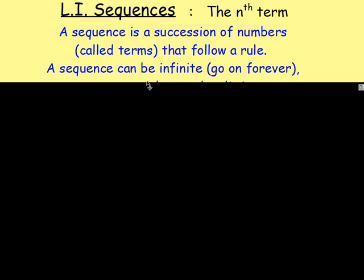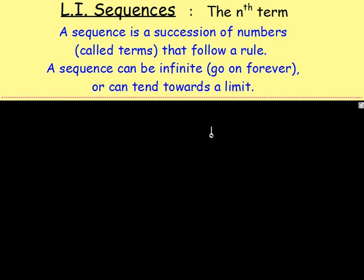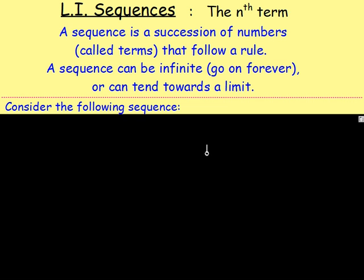Now, a sequence, it can be infinite, which means it goes on and on forever, just like senior prize giving. Or it could tend towards a limit. For example, if you start with sixteen and then you half it, you get eight. If you half that, you get four. If you keep halving it, you're going to get closer and closer and closer towards zero.